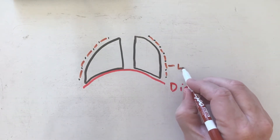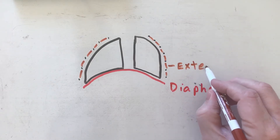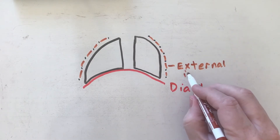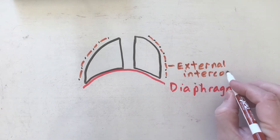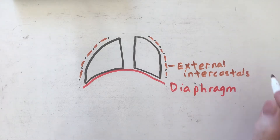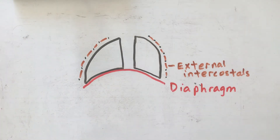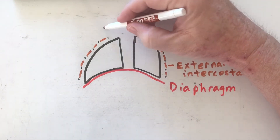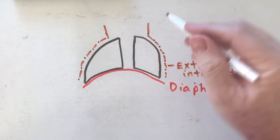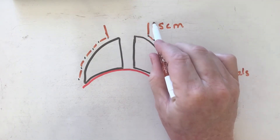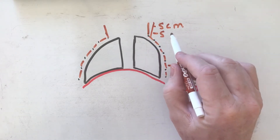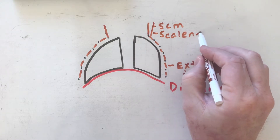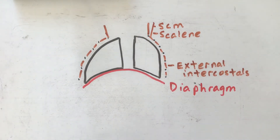I'm not going to go too much into labeling muscles here, but I am going to note the external intercostals — external means these are on the outside. Just on the inside we have internal intercostals, which I'll get to in a minute. For inhalation, we also have some muscles that attach to the rib cage from the neck: the sternocleidomastoid, the scalenes, and the pectoralis minor also plays a role.